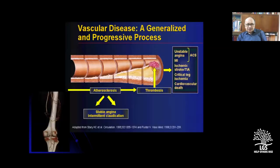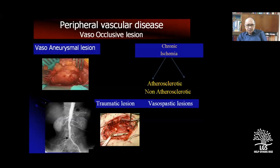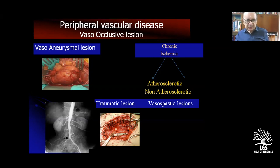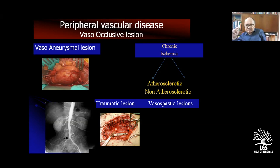Atherosclerotic blocks occur in major vessels, while TAO occurs in minor vessels — the crural arteries. Atherosclerotic process can occur in the heart (CAD) producing unstable angina. Peripheral vascular disease includes vaso-occlusive lesions occurring in the peripheral arteries, particularly the femoral artery downwards. Vaso-aneurysmal lesions include abdominal aneurysm, the commonest example. Chronic ischemia produces atherosclerotic and non-atherosclerotic causes. Vaso-spastic disorders include Raynaud's syndrome.